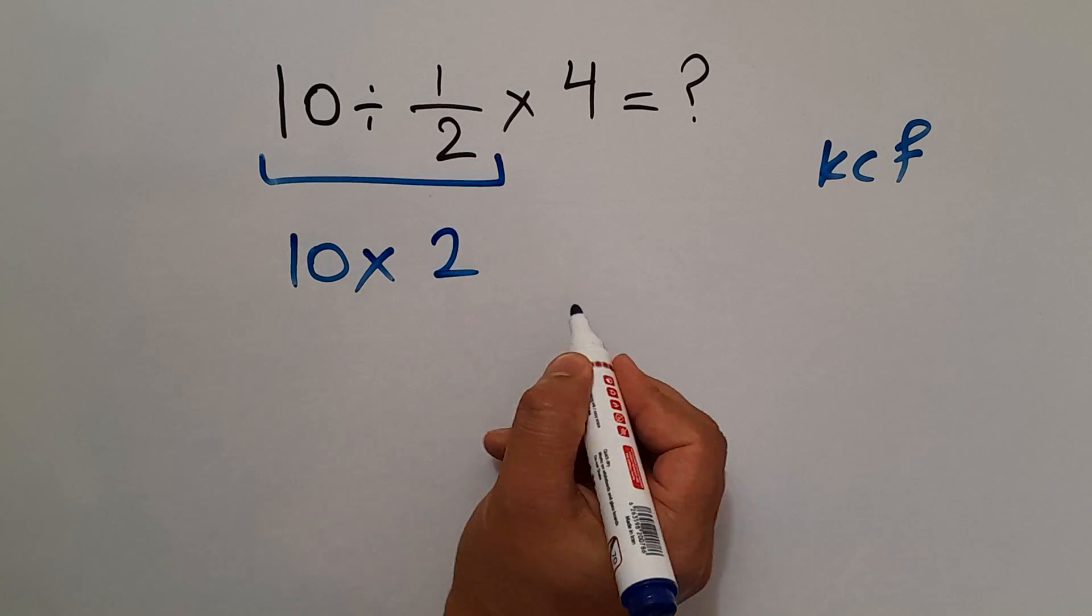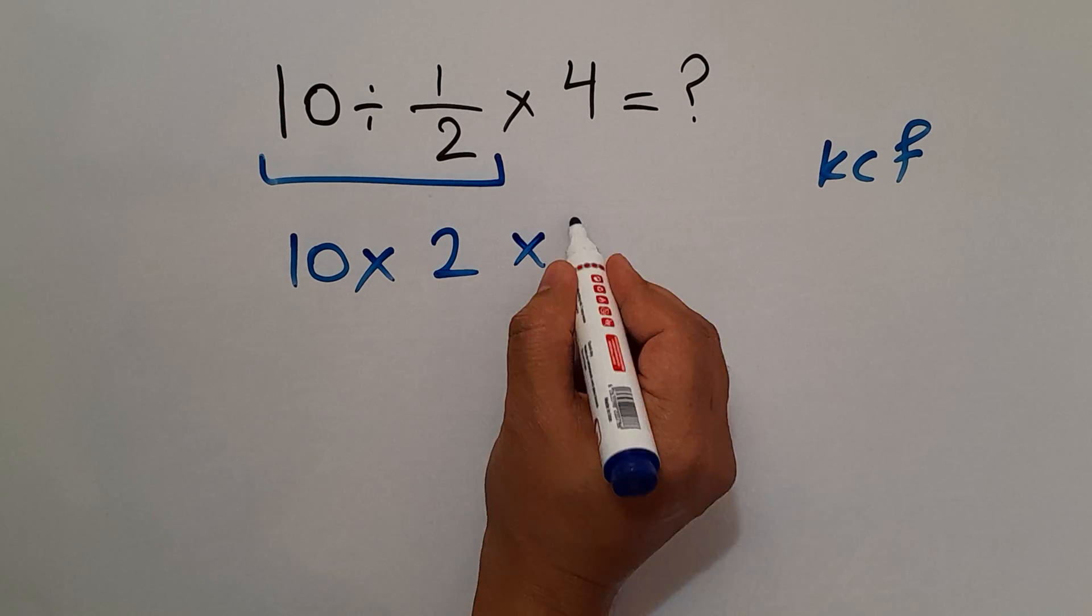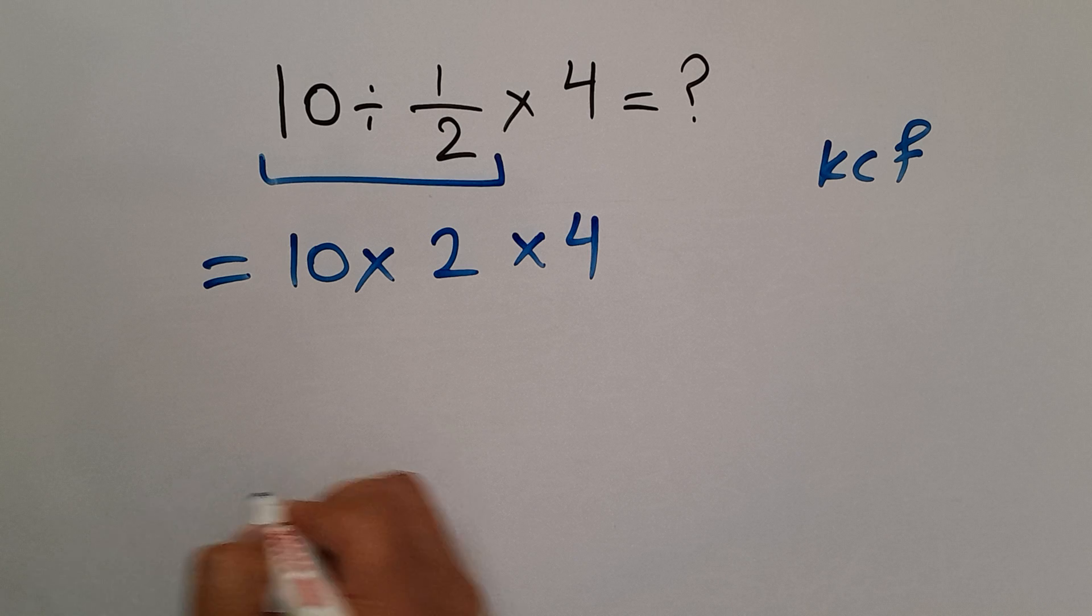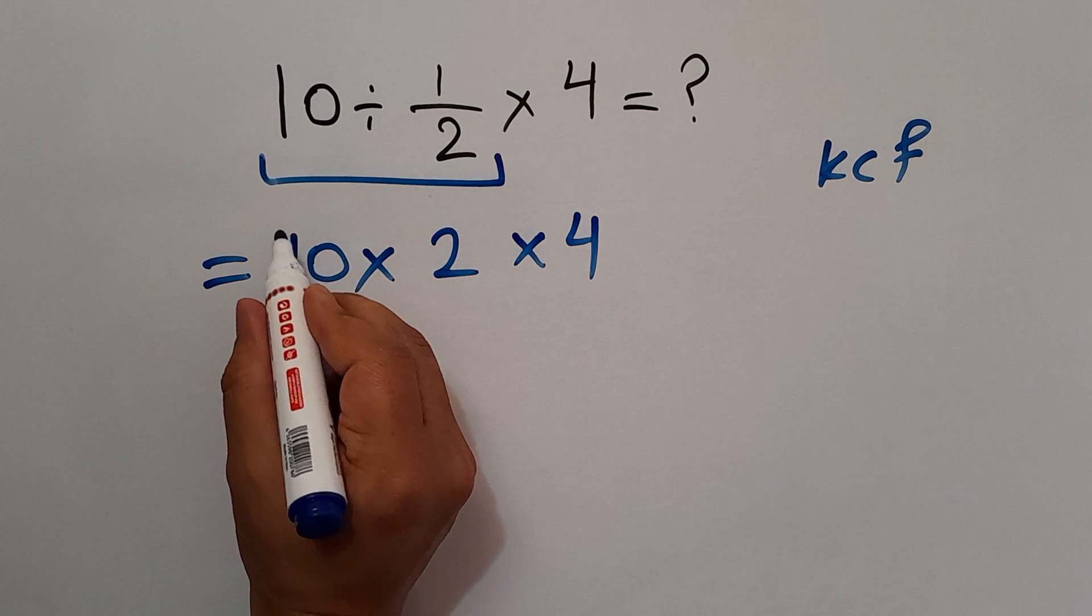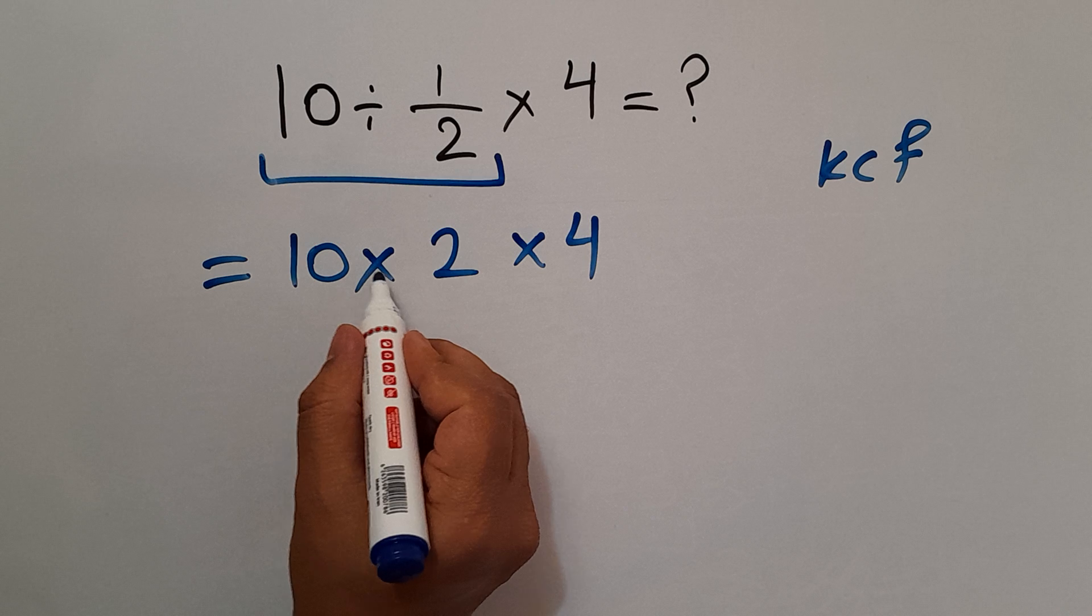Now we have two multiplications, we work from left to right. 10 times 2 equals 20.